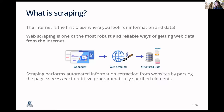So what is scraping? It is one of the most robust and reliable ways of extracting web data from the internet directly. You've got a lot of web pages, and web scraping is used as a tool to produce structured data. Scraping performs automated information extraction by parsing the page source code, which is why we need to understand some HTML.